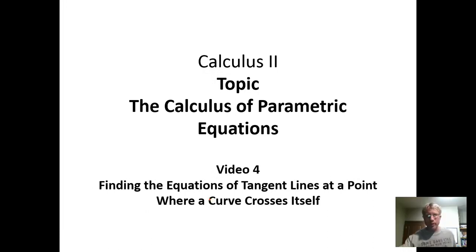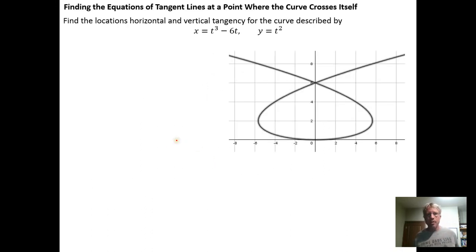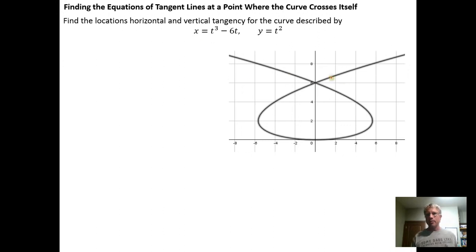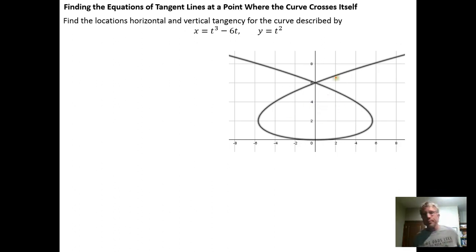In this video we're going to look at finding the equations of the tangent lines at a point where a curve crosses itself. Here we have a curve that's been parameterized: x equals t cubed minus 6t, y equals t squared. Here's a graph of that parameterized curve — I graphed it in GeoGebra on the t interval from negative 10 to 10.